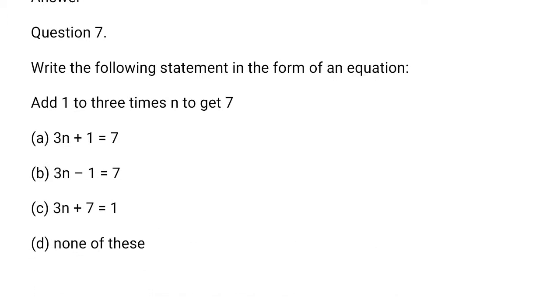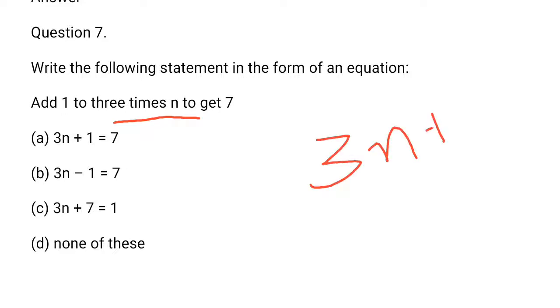Add 1 to 3 times n to get 7. So, 3 times n is 3n. Add 1 and you will get 7. So, 3n plus 1 is equal to 7. This option is correct.